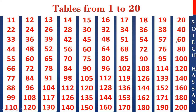20th table: 20 1s are 20, 20 2s are 40, 20 3s are 60, 20 4s are 80, 20 5s are 100, 20 6s are 120, 20 7s are 140, 20 8s are 160, 20 9s are 180, 20 10s are 200. Thank you.